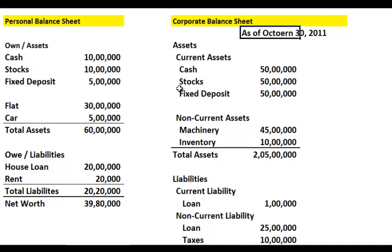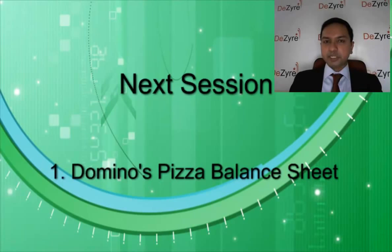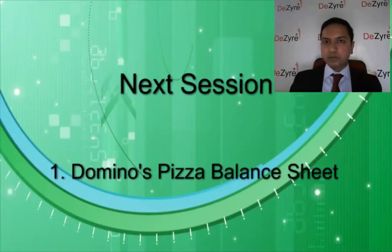So that's a balance sheet. In summary, a balance sheet must accompany an income statement to provide a holistic view of a company's financial status. There is one other statement called the cash flow statement, which connects the balance sheet and income statement — probably the topic of a session two sessions from now. In our next session, we'll take each component — current assets, non-current assets, current liabilities, non-current liabilities — and look at a real balance sheet of Domino's Pizza to understand how it differs from this simple one. Thank you, see you at the next session.